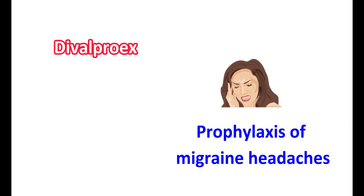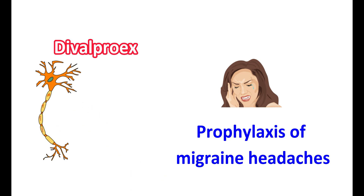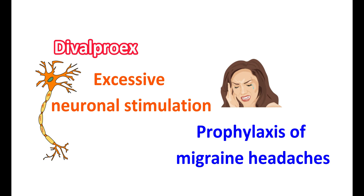Another clinical indication of divalproex is in the prophylaxis of migraine headaches. Migraine involves neuronal stimulation which induces many symptoms including cluster headaches, and these migraine attacks are associated with excessive neuronal stimulation. Therefore, divalproex can be used in prophylaxis — that means it can be used to prevent the number of migraine attacks.